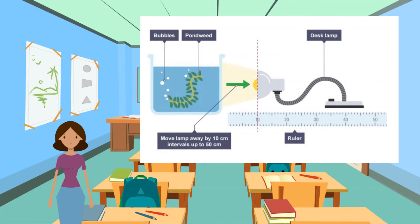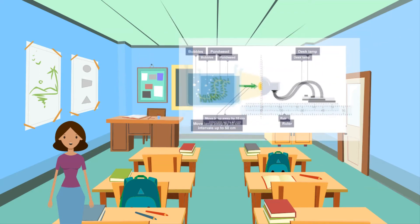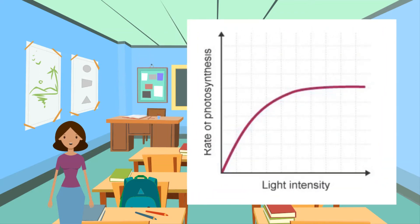As oxygen is a product of photosynthesis, the rate of bubble production can be used as a measurement to find the rate of photosynthesis. More bubbles per time mean a faster rate of photosynthesis. The light source can be moved to adjust the light intensity to the plant. If this experiment is done and the results were graphed, it would give a similar graph to this.